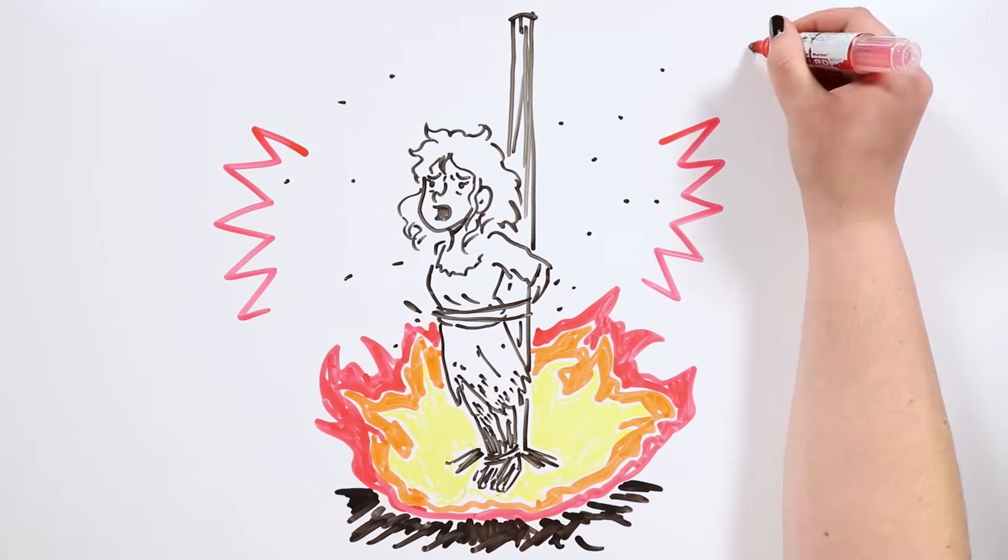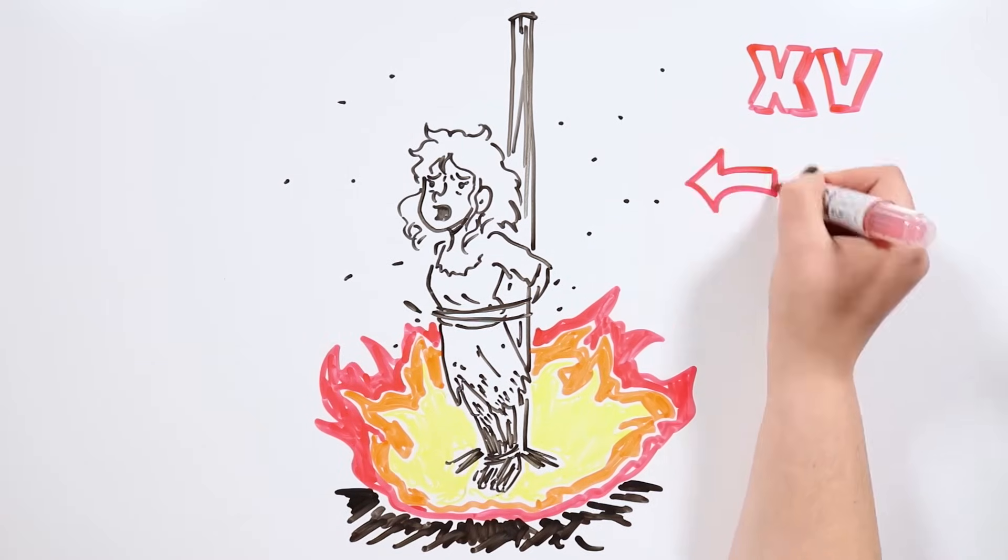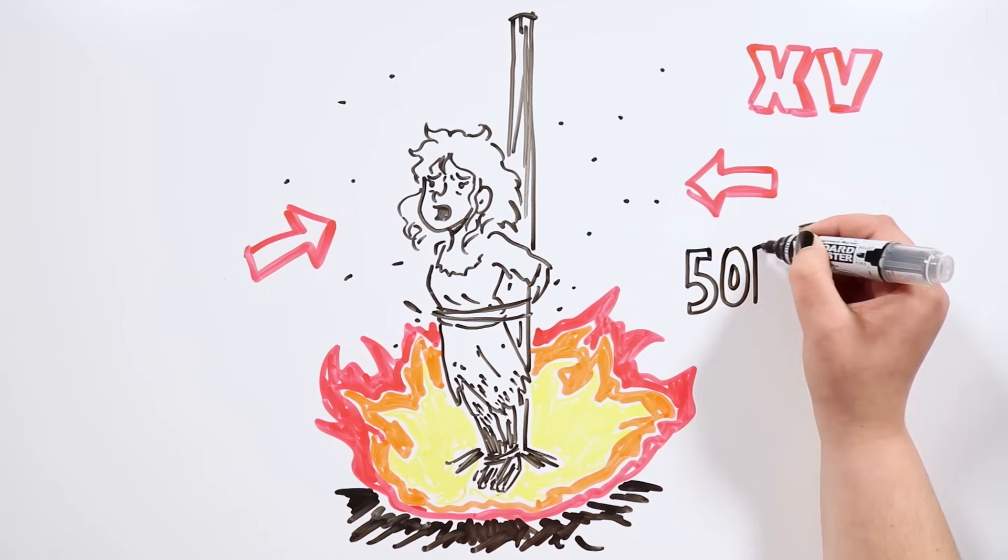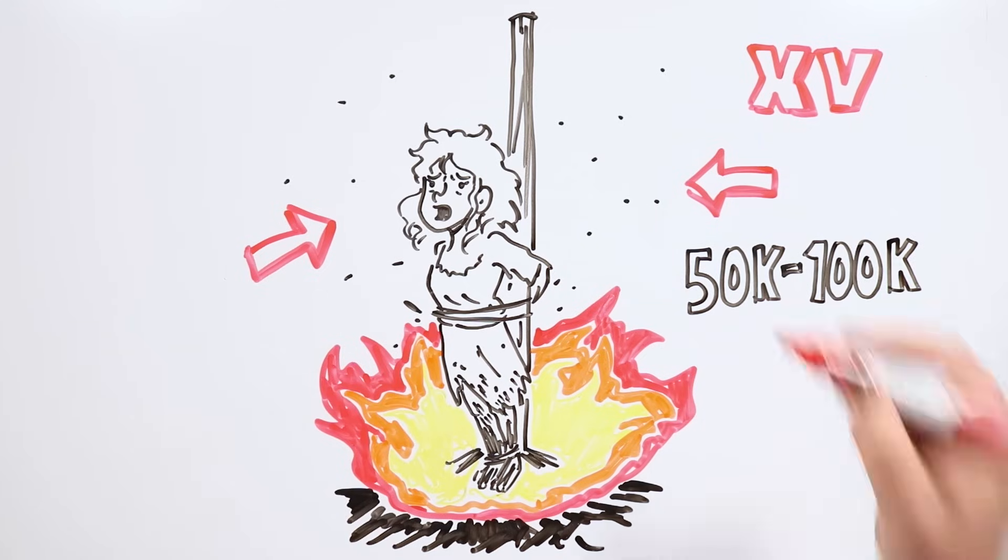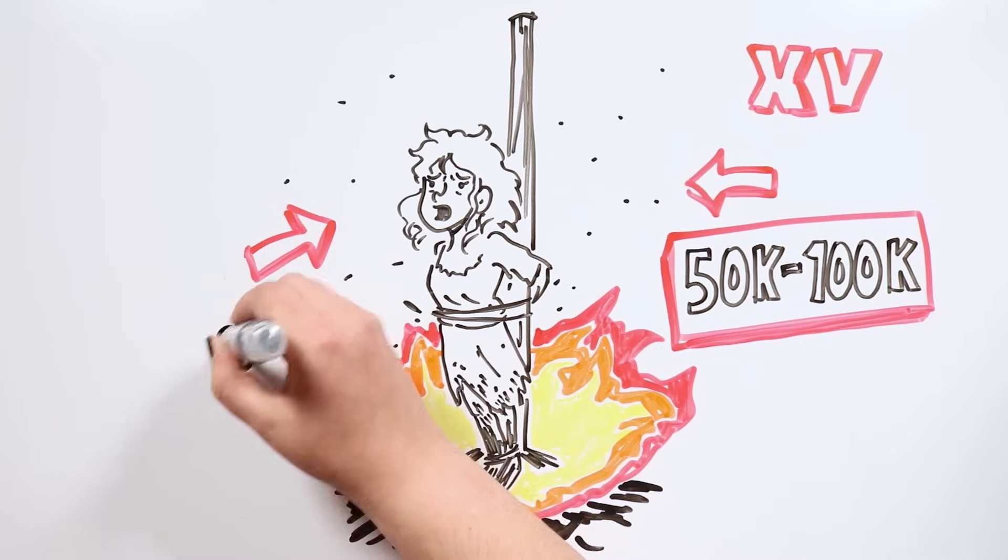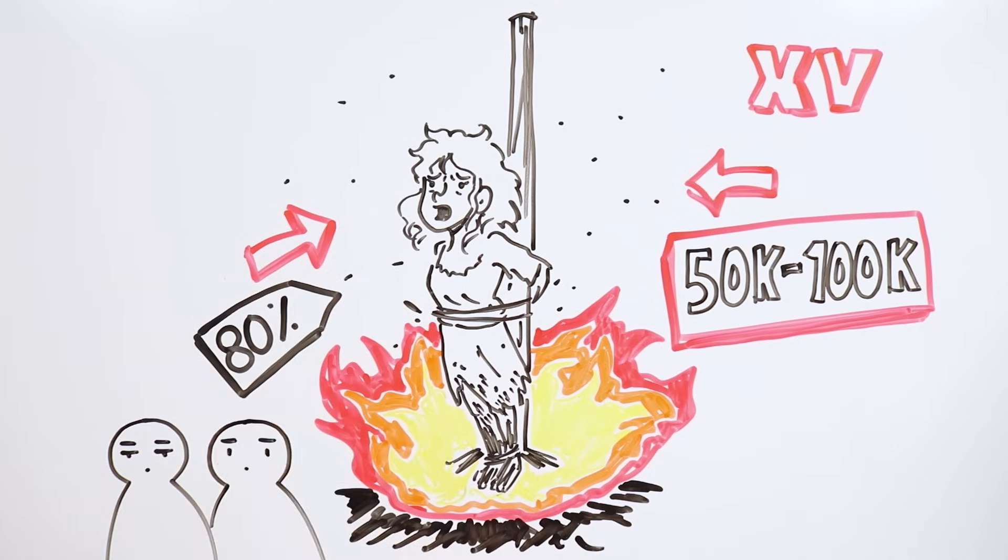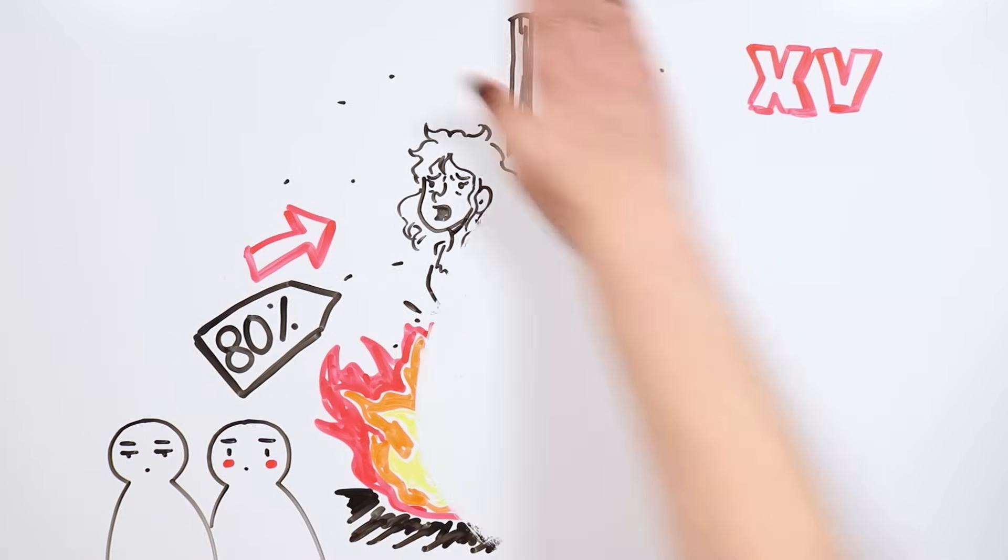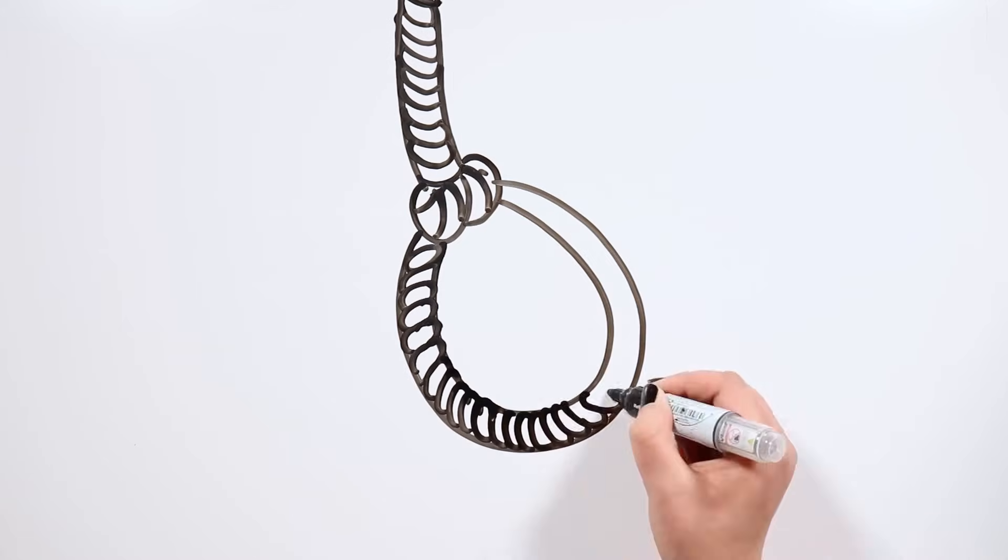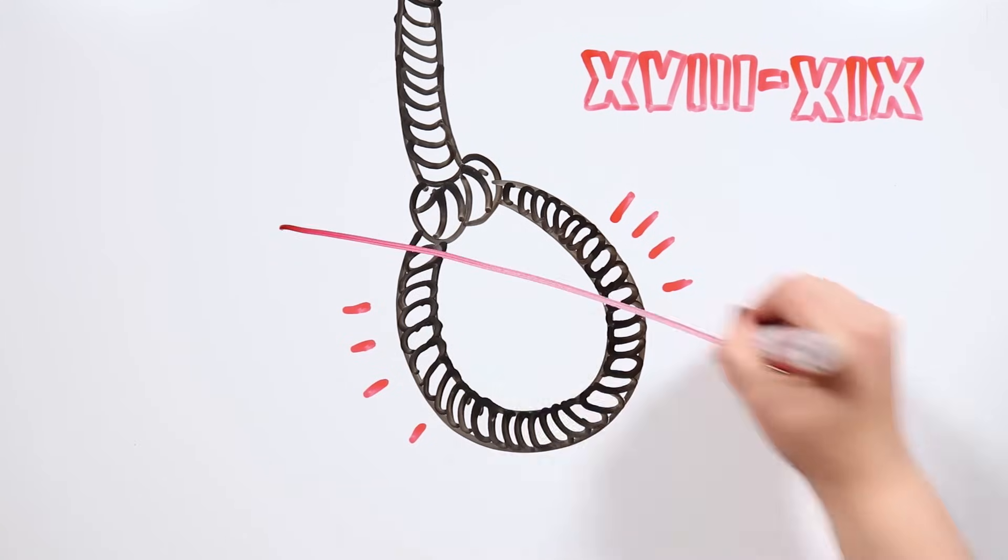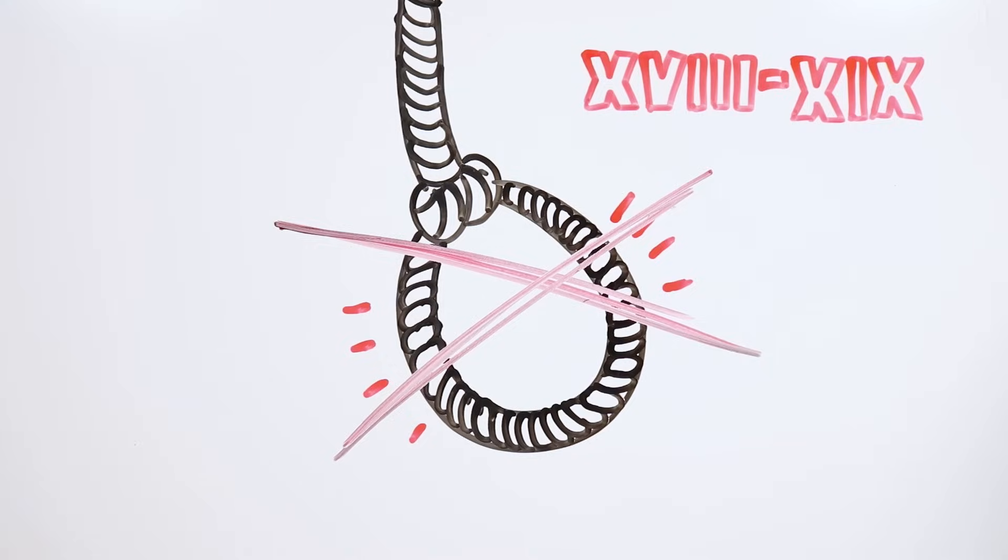The bloodiest time for witches started in the 15th century when it was allowed for the civilian court to carry out those trials. In all of Europe, it is calculated that between 50,000 and 100,000 people were sentenced to death during those trials, about 80 percent of them being women. The last victims date from the end of the 18th century and the beginning of the 19th century when numerous protests finally stopped those cruel trials.